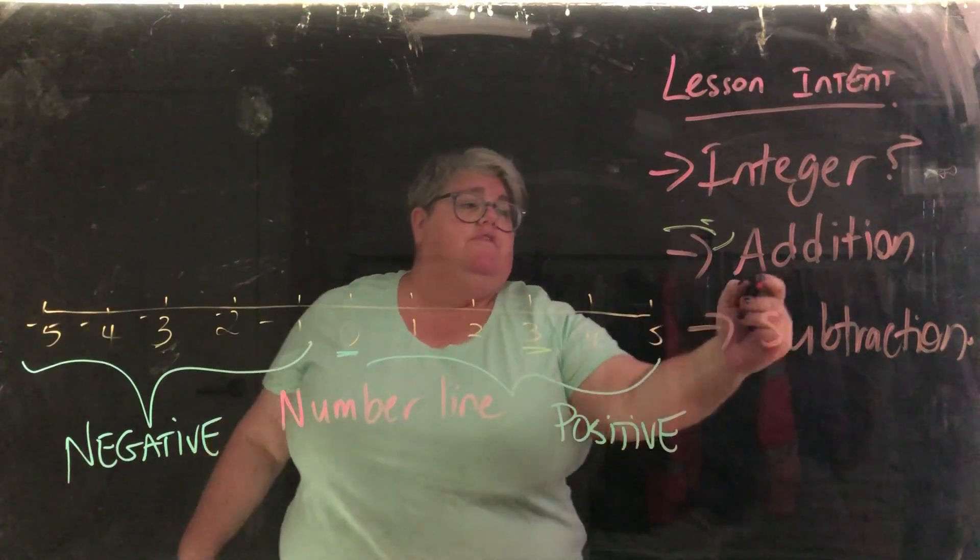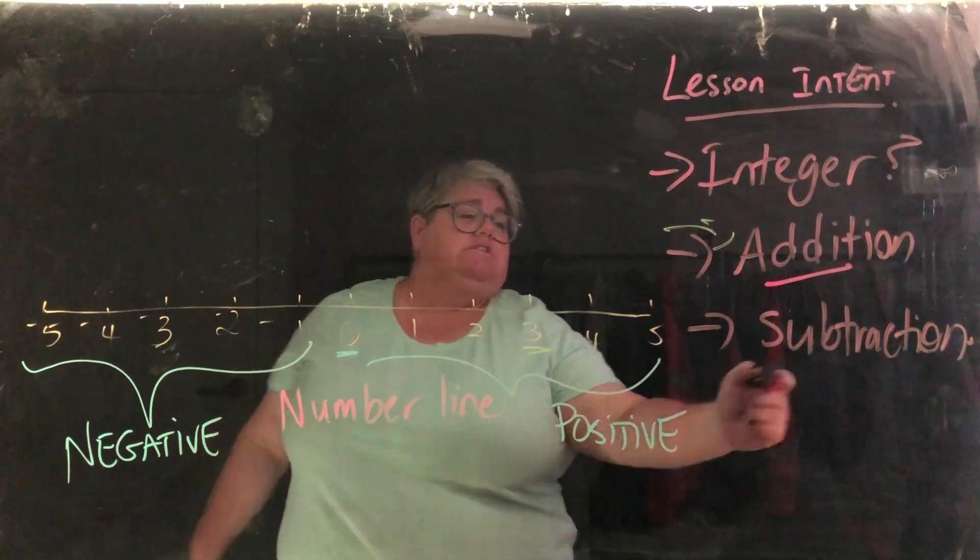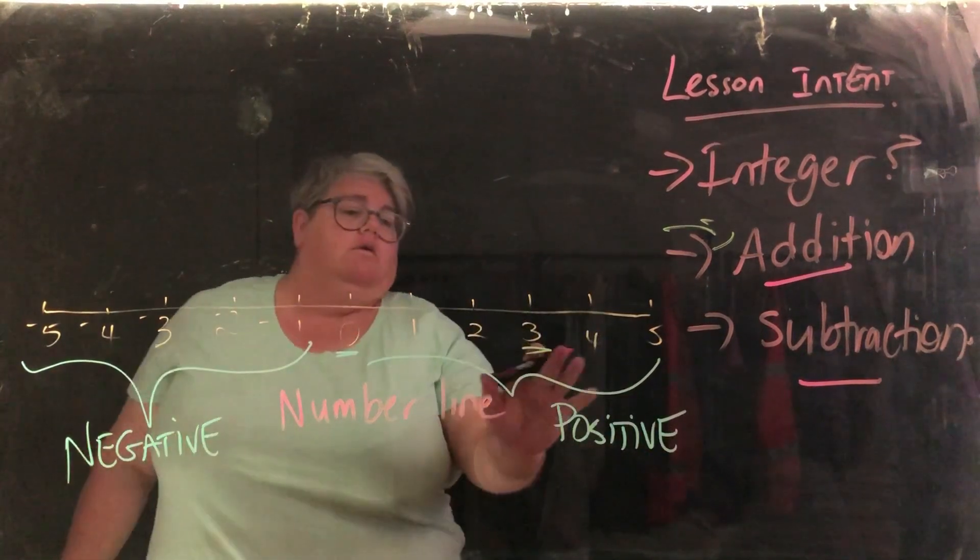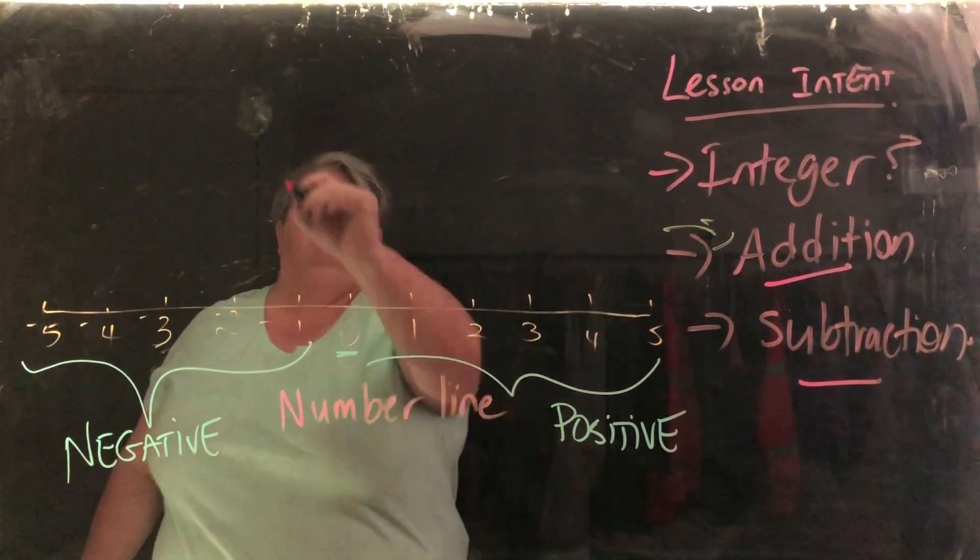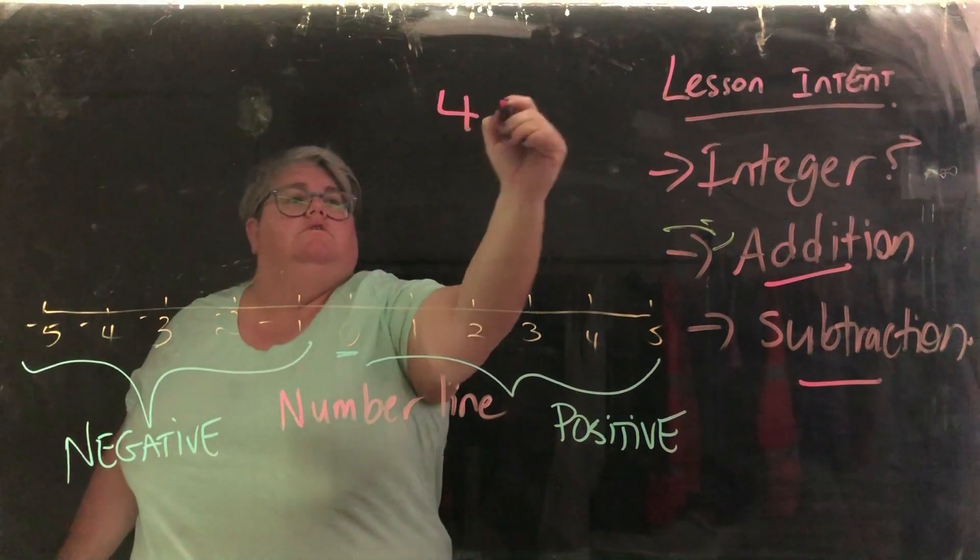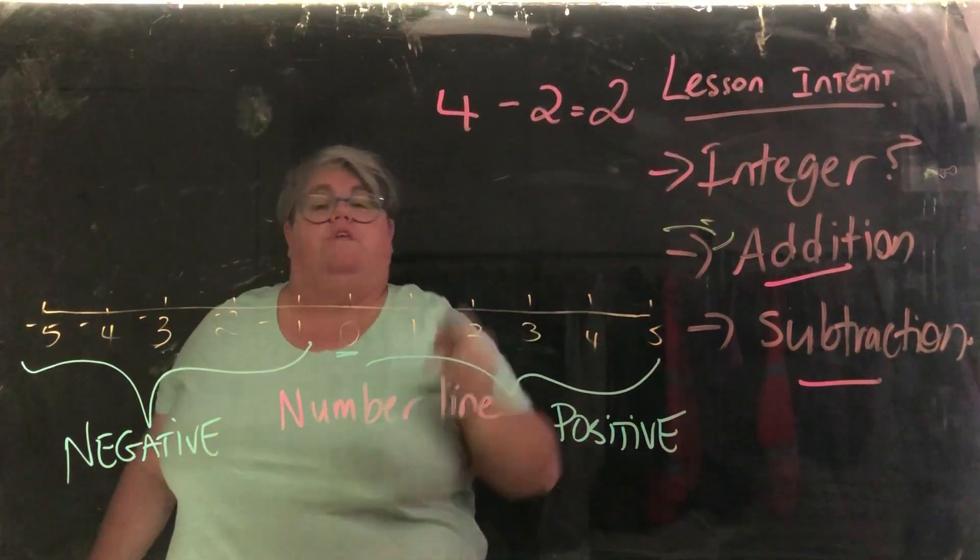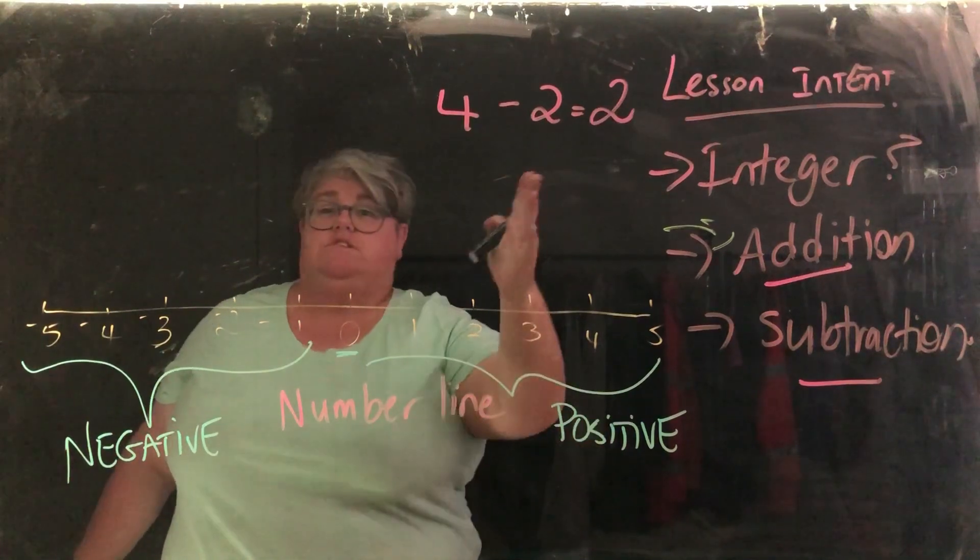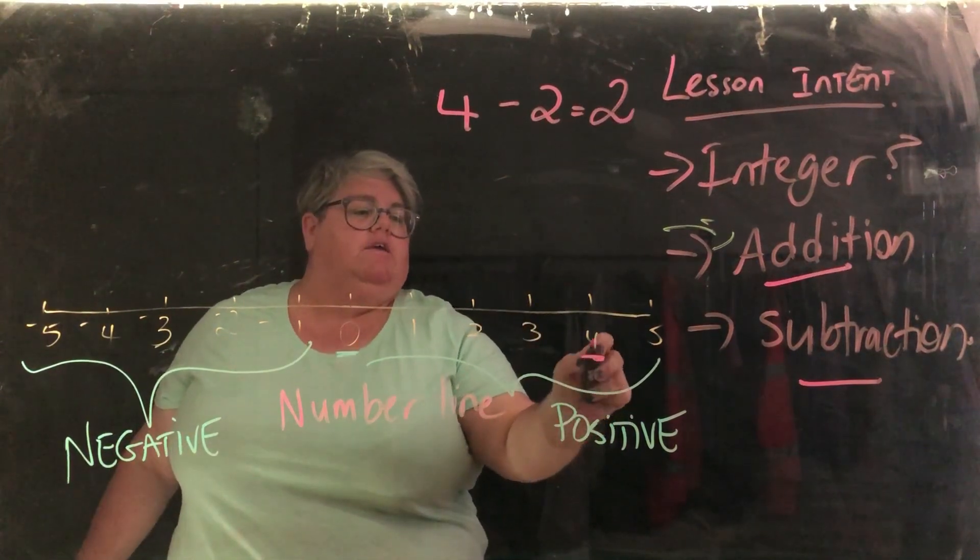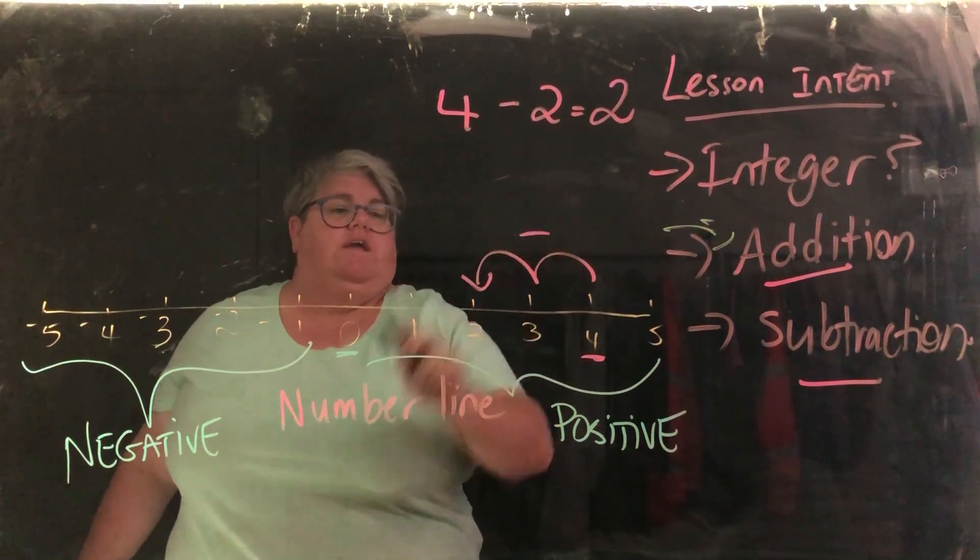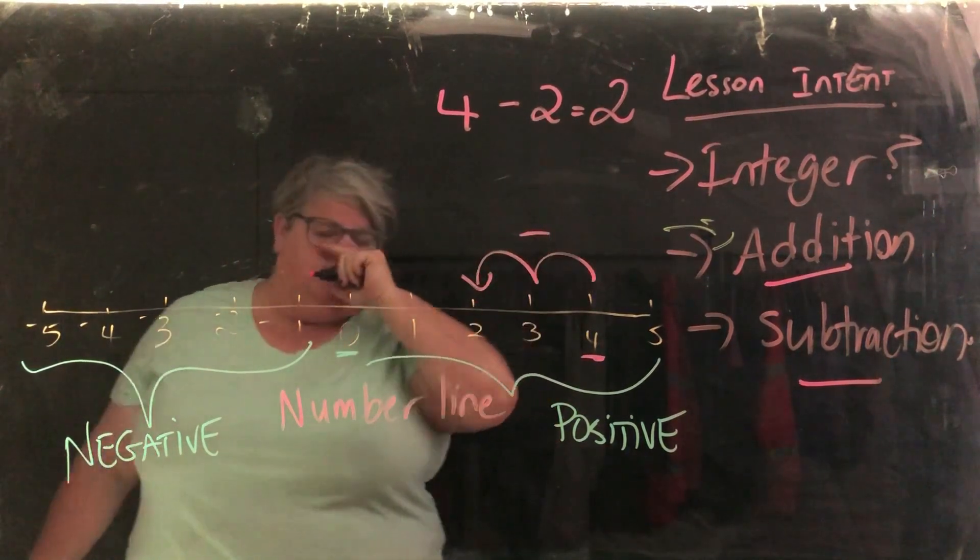So we have covered our addition. Now let's have a look at our subtraction. So let's say we have 4, take 2. Now we know that it's 2. So this is primary school stuff. So we're starting here and we're going 1, 2. Because we're going negative, we're going backwards. So the answer is 2.